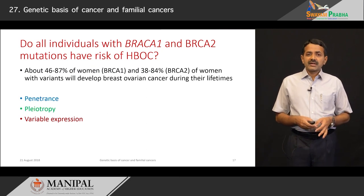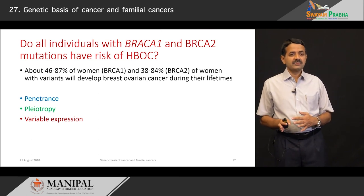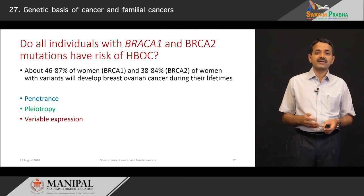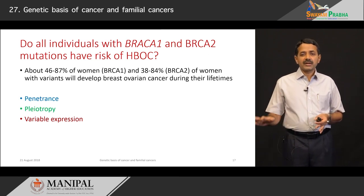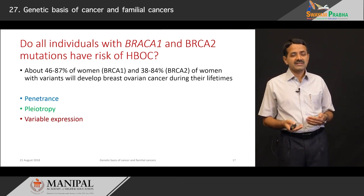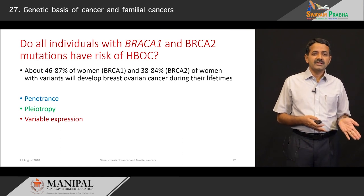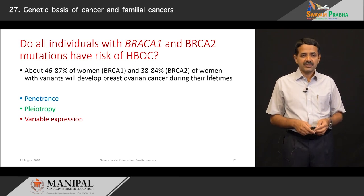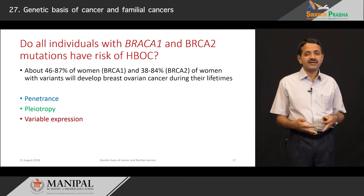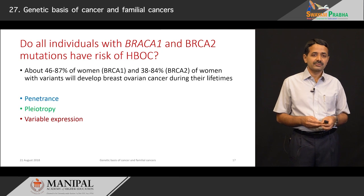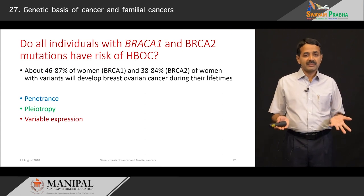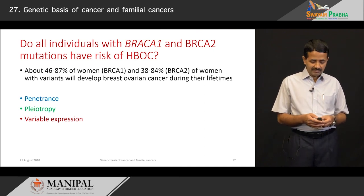Do all individuals with BRCA1 and BRCA2 mutations develop hereditary breast and ovarian cancer? No. About 46 to 87 percent of women with BRCA1 variants and 38 to 84 percent of women with BRCA2 variants develop breast and ovarian cancer during their lifetime. This means BRCA1 and BRCA2 mutations have reduced penetrance — not 100 percent. BRCA1 and BRCA2 also demonstrate pleiotropy, affecting breast, ovary, or other soft tissues. Expression is variable: some cases may be mild, others highly virulent, with multiple tumours at multiple sites, and variable severity of metastasis from person to person.